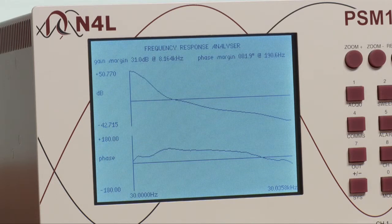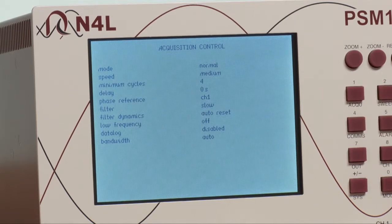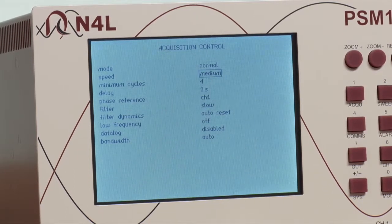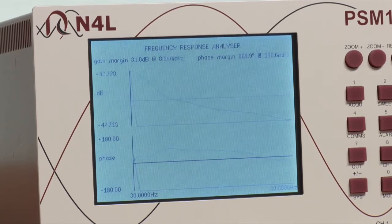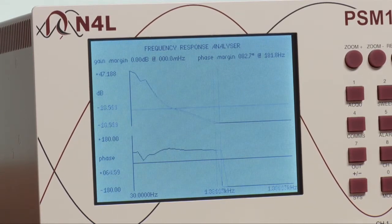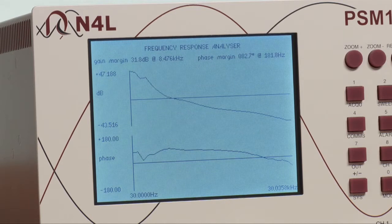The measurement we just made was the standard speed. If we now go to the acquisition menu, we can increase the speed from medium to fast and run another plot. This enables engineers to make tests easily and quickly during the development of a control circuit and then return to standard speed for a more detailed analysis.